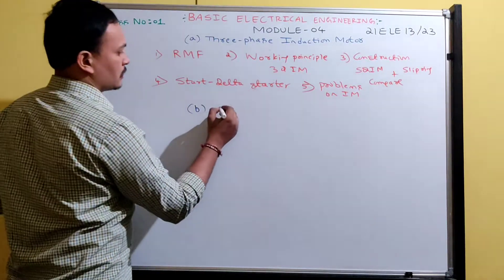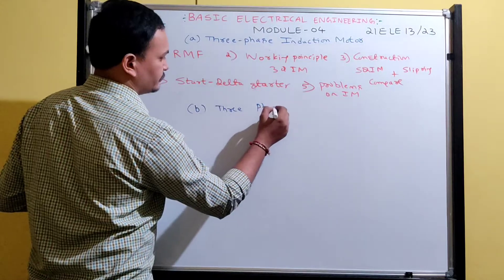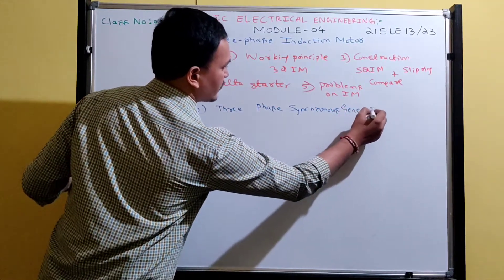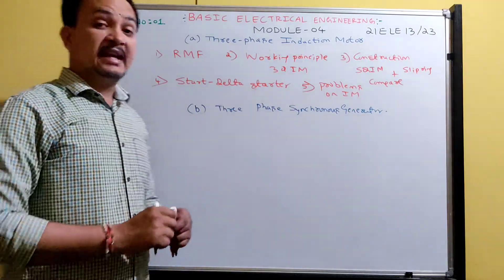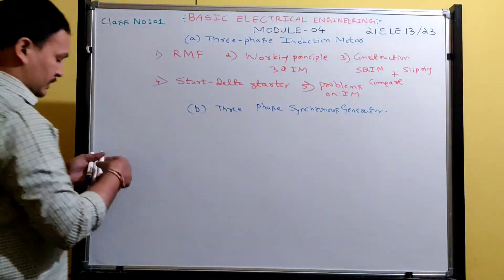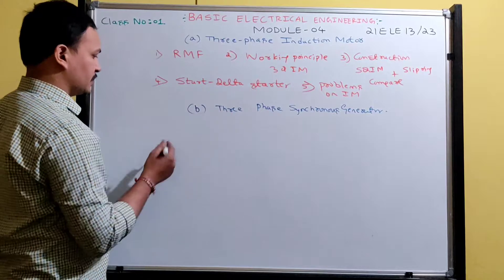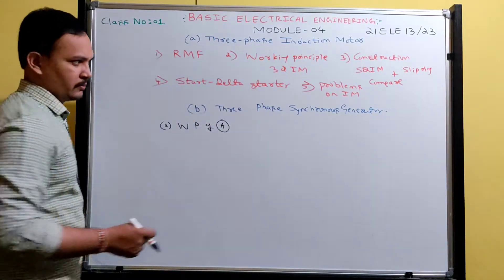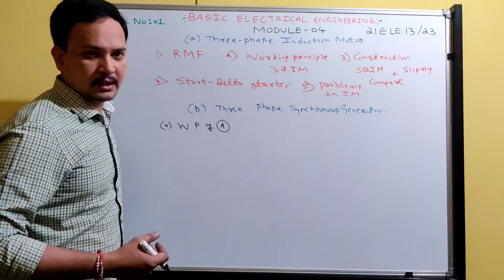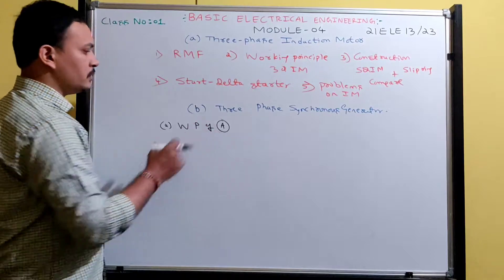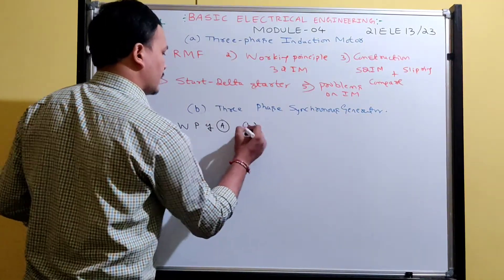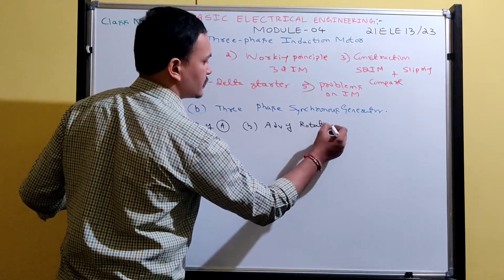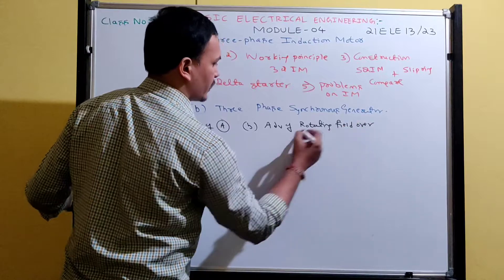The second part is the three-phase synchronous generator. Synchronous generator, alternator, and AC generator all mean the same thing. Under this topic, the first thing we are learning is the working principle of an alternator. After that, the next topic is the advantages of rotating field over rotating armature.